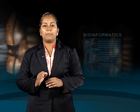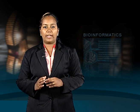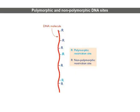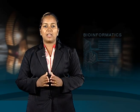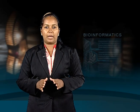Genetic mapping using RFLPs as DNA markers can locate the positions of polymorphic restriction sites within a genome, but very few of the restriction sites in a genome are polymorphic. So many sites are not mapped by this technique.